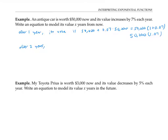After two years, the value will be 50,000 times (1 + 0.07) squared, or 50,000 times 1.07 squared. That's because the previous year's value is multiplied again by 1.07.